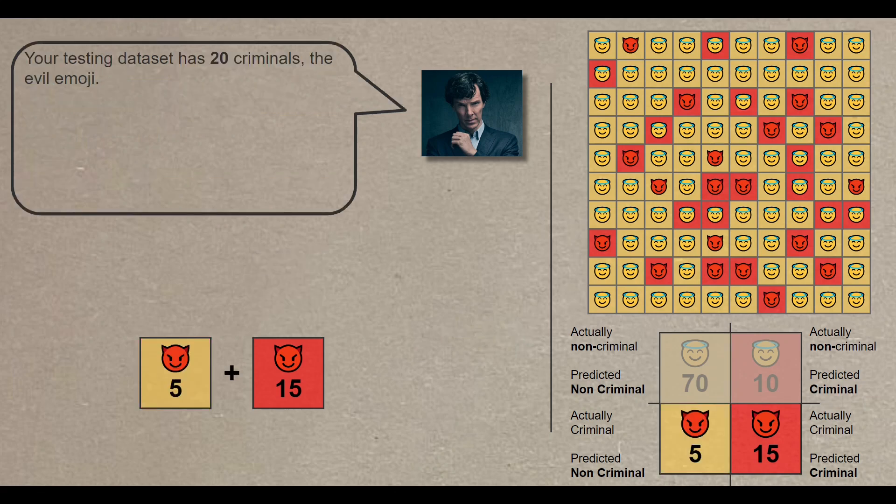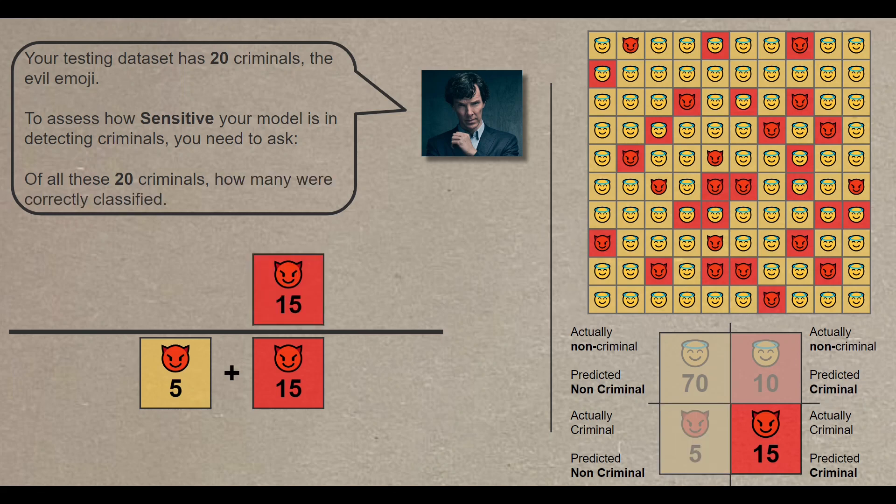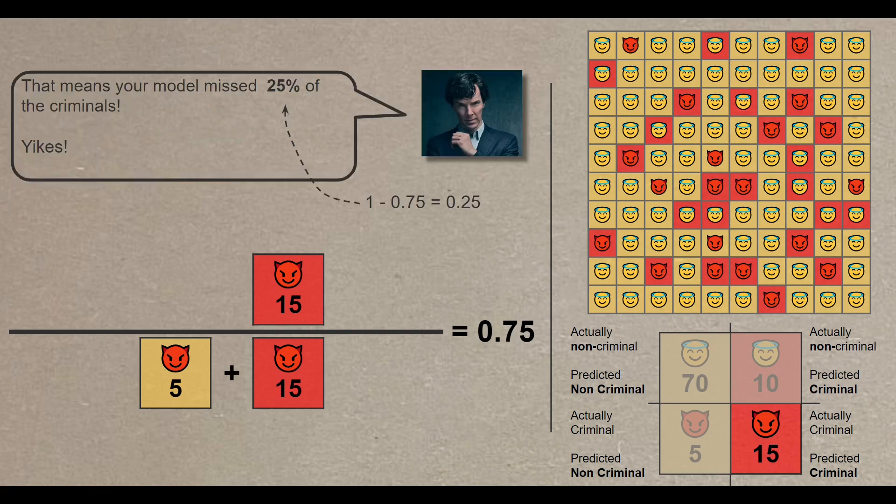The second thing you need to assess is the sensitivity of your model. Your testing dataset has 20 criminals, denoted as the devil emoji. To assess how sensitive your model is in detecting criminals, you need to ask the following question. Of all these 20 criminals, how many were correctly classified? That would be 15 divided by 20, 75%. That means your model missed 25% of the criminals. Yikes.